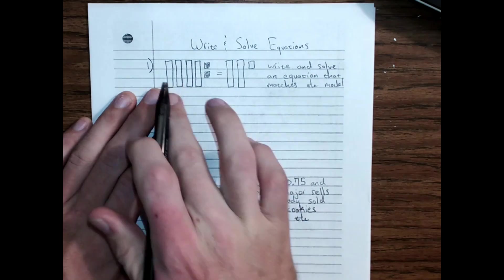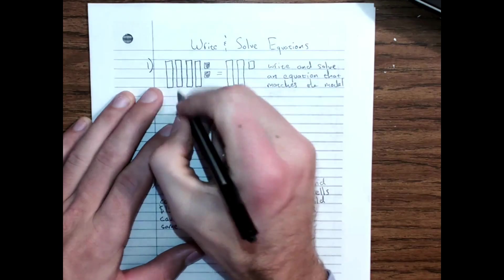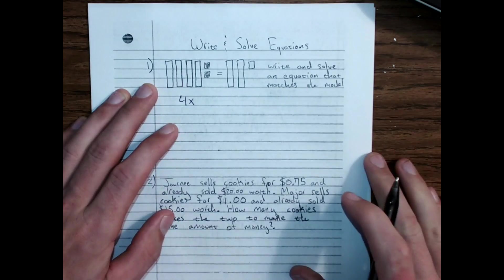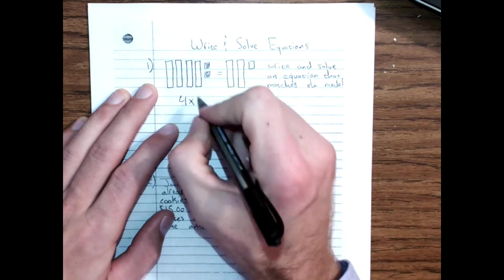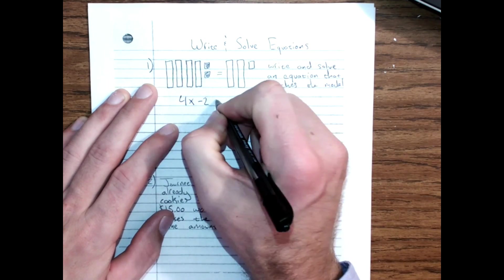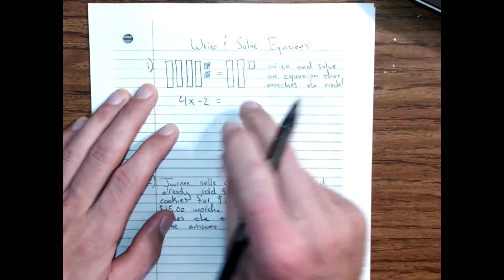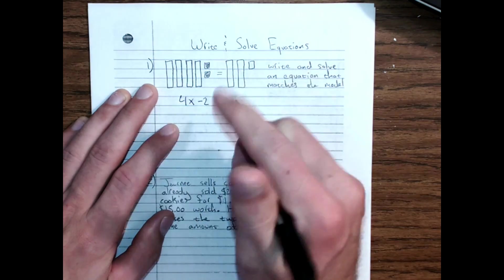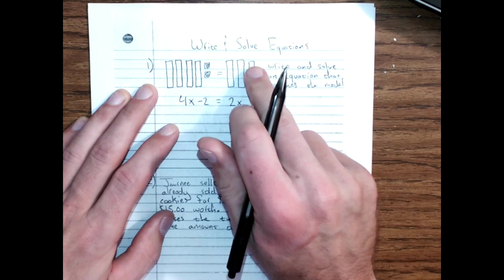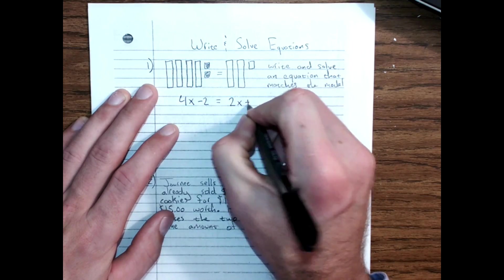So, 4 bars, 4x, 2 dark squares, minus 2, equals sign, 2 bars, 2x, 1 unshaded square, plus 1.